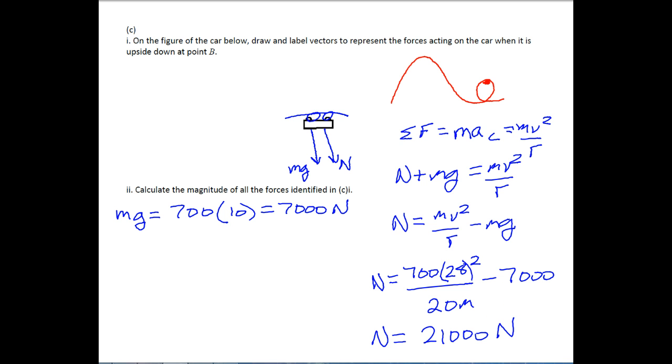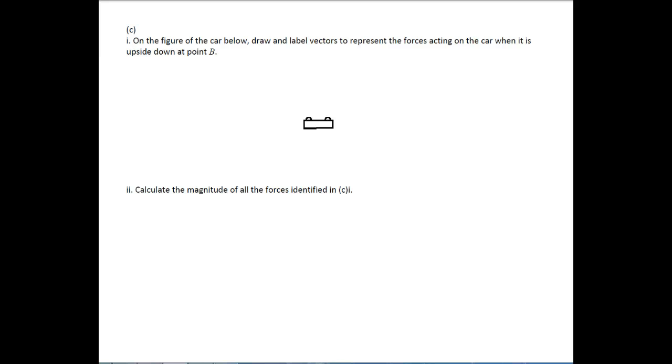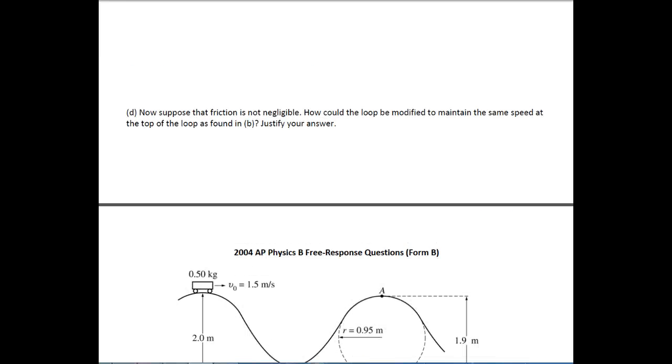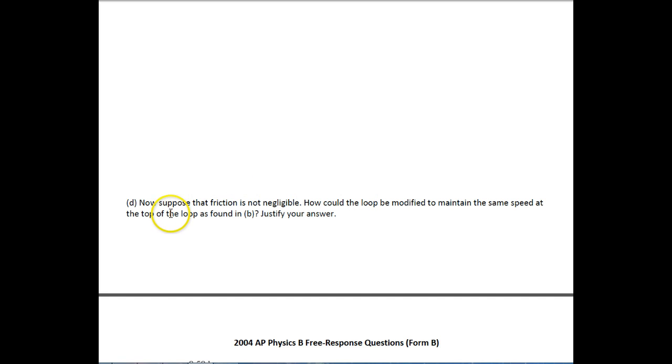And that is letter C, part I and part II. So you've got a picture to draw, and then you've got the other part to go through. It says, now suppose that friction is not negligible. So now you have some friction. How could the loop be modified to maintain the same speed at the top of the loop as found in b? Justify your answer. So I guess there's a couple things we can think about here. Originally, this is what it looks like, and if there's no friction, it makes it. If there's friction, I know that I'm going to lose some energy due to friction. Which means it won't be going fast enough here.